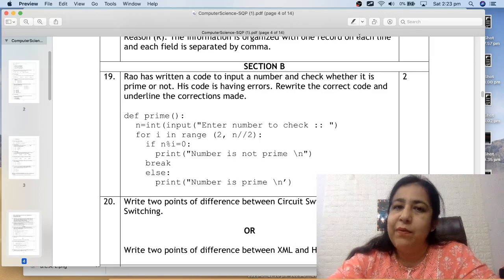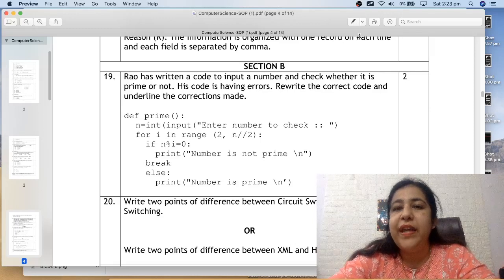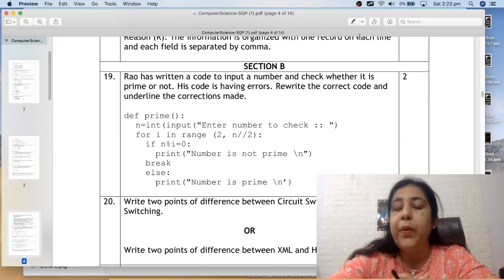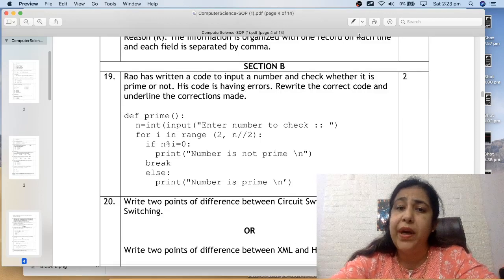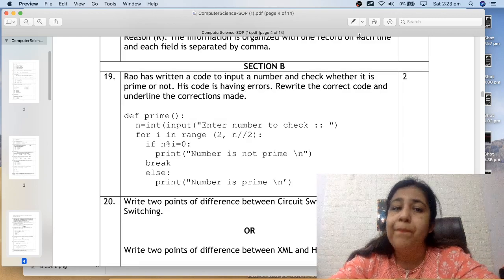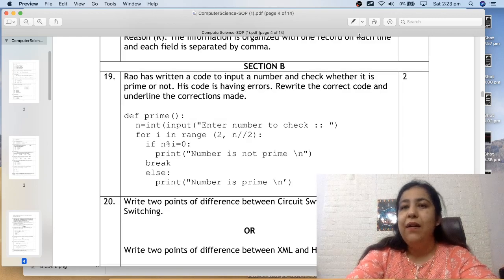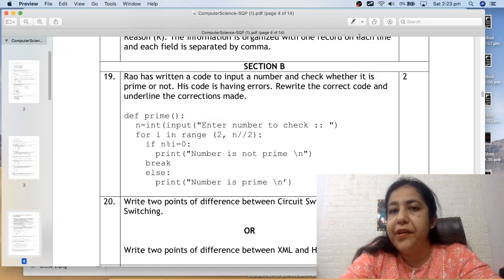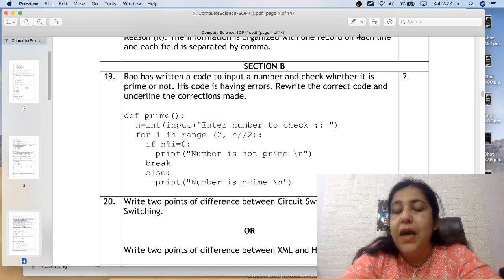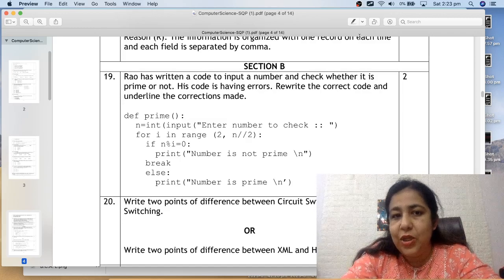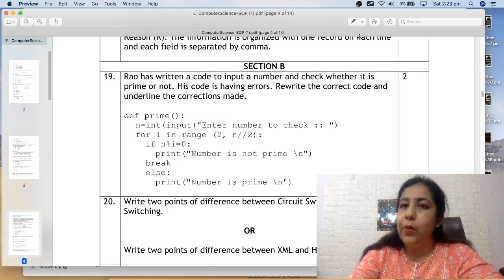Hi all, this is Anjali. Welcome to my channel. Now we will solve Section B of sample question papers which was issued from CBSE for the year 2023. In one video, we are going to do one section. Section A we have already done. Now it's time to do Section B. Seven questions, two marks each. Let's see what the first question is.